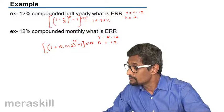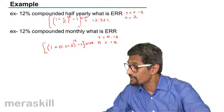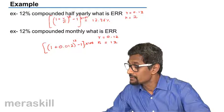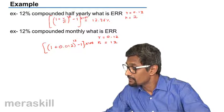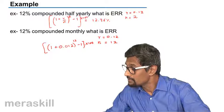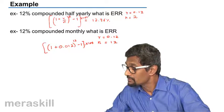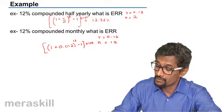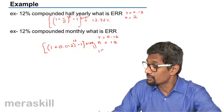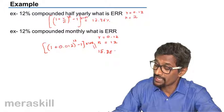So it's going to be 1.012 raised to 12 minus 1 times 100, which works out to roughly 15.38%.